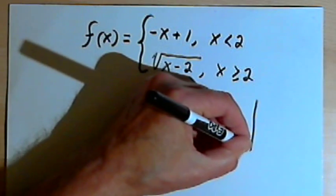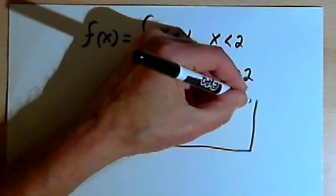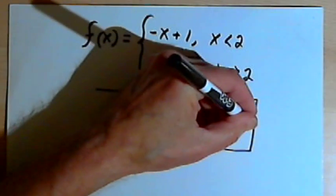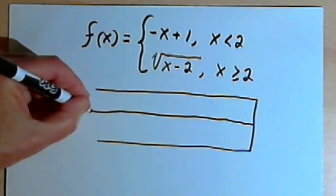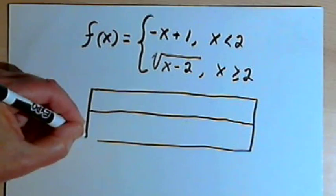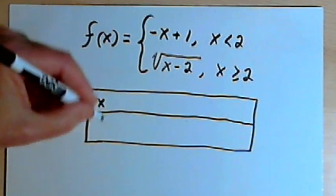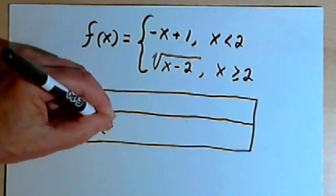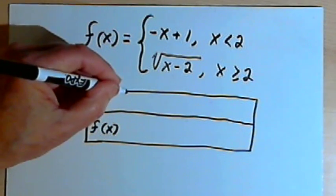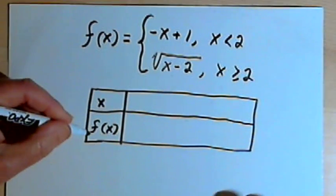Very often when you're working with piecewise defined functions you may be given an assignment to fill in a table of values. So we'll make a table here. We'll make one row for x values and another row for f, that would be the same as y.